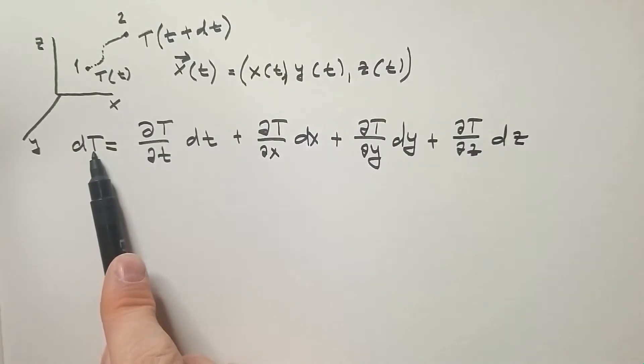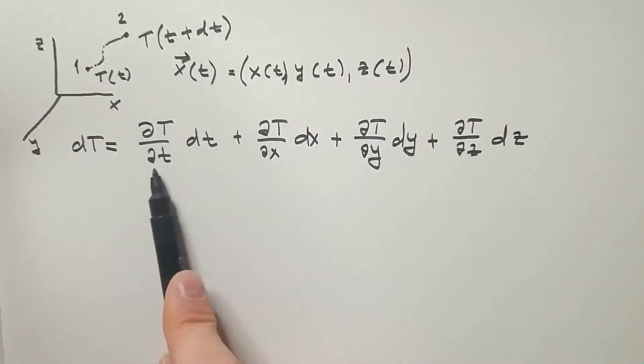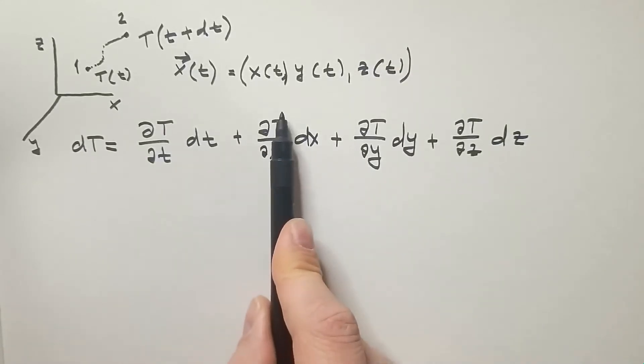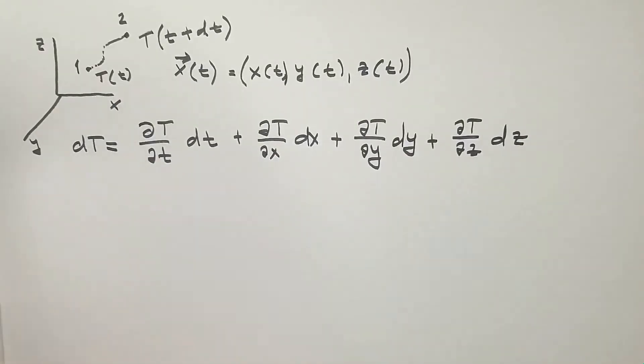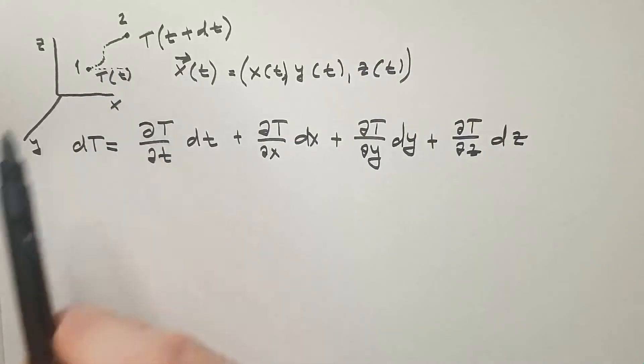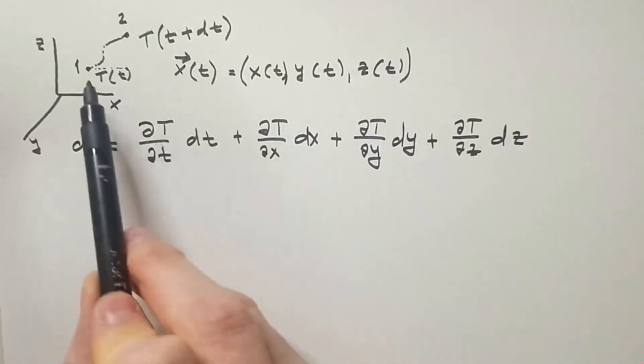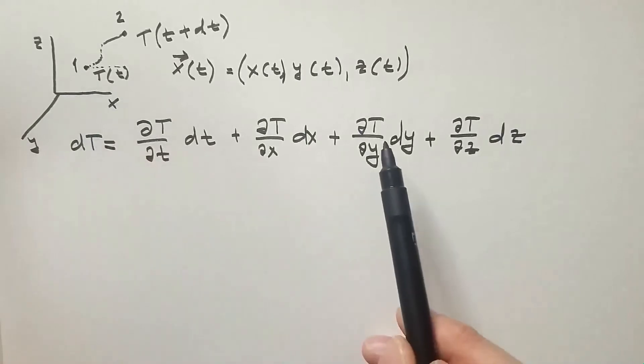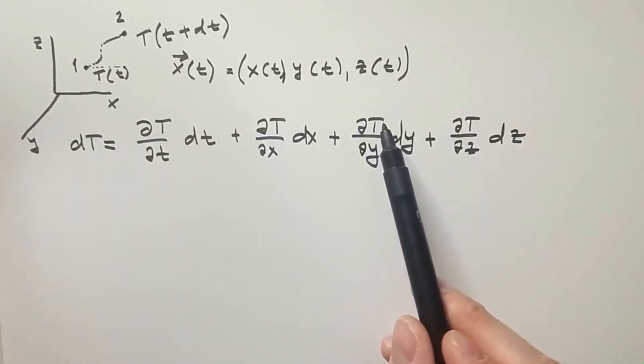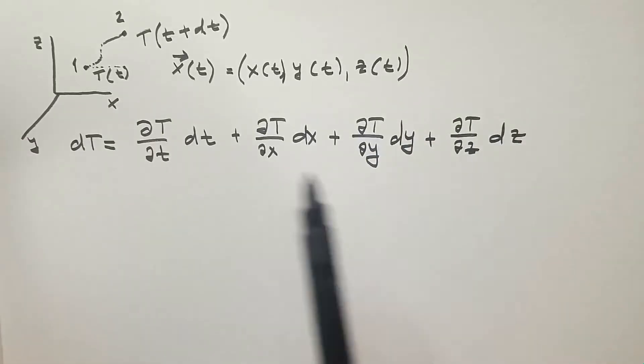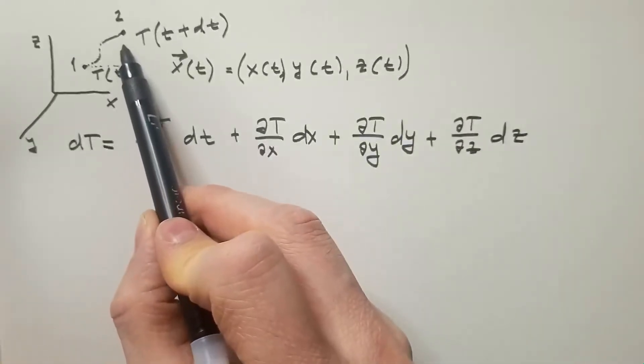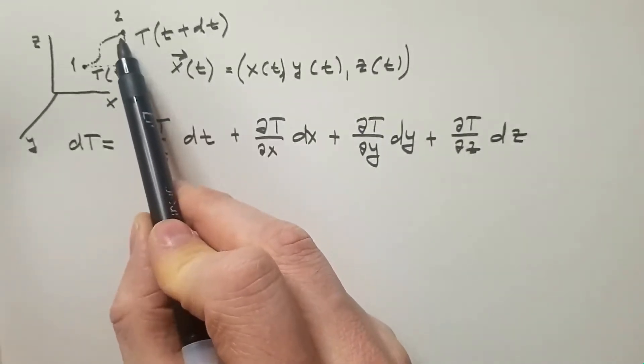One more time, total derivative of temperature in this case is the rate of change of temperature times the increment of time. Rate of change of temperature along the x component, for example in this direction, times the distance in that direction. Rate of change along the y direction times the distance dy and the same in the z direction. In this case, it would be that rate of change along this distance times that distance.